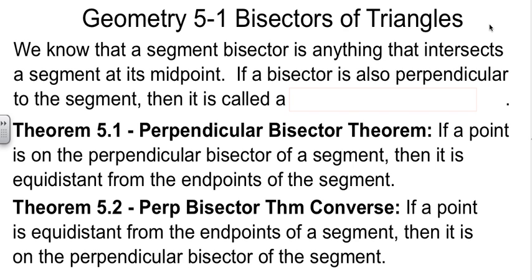We already know that anything that intersects a segment at its midpoint is called a bisector for that segment. It can be a point, line, another segment, a plane, a ray, any number of things.